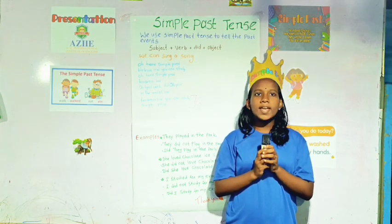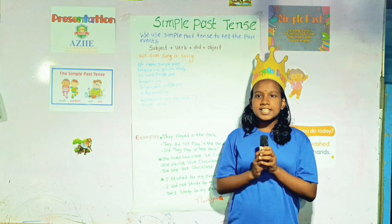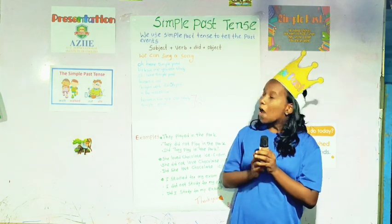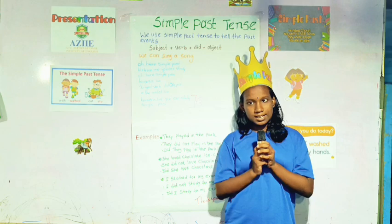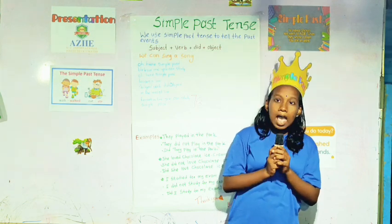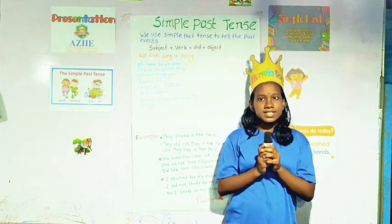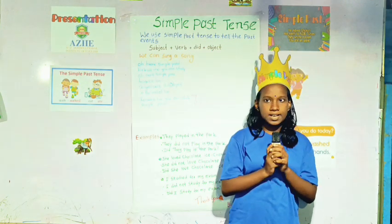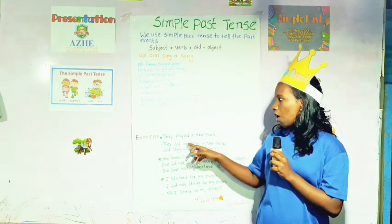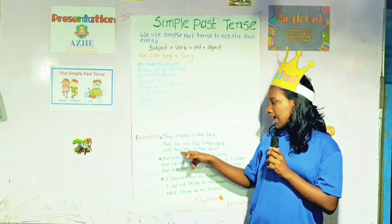Good evening all of you. I am going to explain about simple past tense. We use simple past tense to tell the past event. Structure is subject plus verb plus state past plus object. We can sing a song. Oh, here, simple past — subject plus verb plus did past, object in the rest of life. You can study simple past. Example, normal form: They are playing in the field. They did not play in the field.